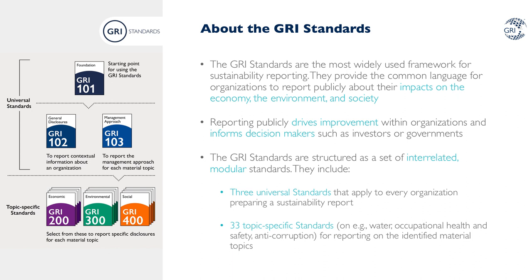GRI 103 is designed to be used together with a library of topic-specific standards. The 33 topic-specific standards are designed to report specific information on a wide range of economic, environmental and social topics, including anti-corruption, human rights, and of course water and effluence. Each organization can select which topic-specific standards to report on based on their material topics. Because the standards are modular, they can be updated independently to respond to new developments. This is what has been done with GRI 303 Water and Effluence.